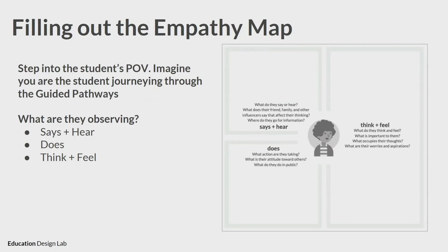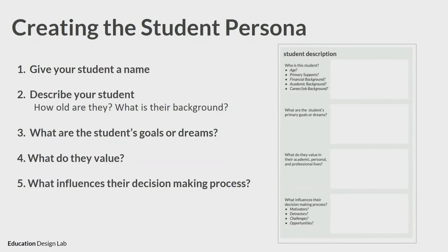Part two — after we've been able to describe that, we're going to do an empathy mapping exercise. Imagine that student now journeying through Guided Pathways on your campus. There are a couple of questions around what does the student say or hear on your campus? What are they observing? What do they do — do they go to class every day, do they talk to counselors, do they ignore their emails? And then what are they thinking and feeling? How do they feel about Guided Pathways? So we have about 16 minutes to do both parts. We're going to give you seven minutes to start on Part 1 — decide on a student category and go through the list of five on the left-hand side of your poster.